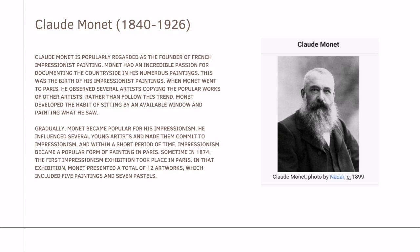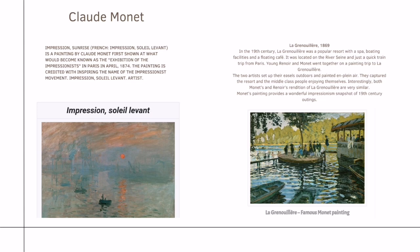Sometime in 1874, the first Impressionism exhibition took place in Paris. In that exhibition, Monet presented a total of 12 artworks, which included 5 paintings and 7 pastels. Impression, Sunrise is a painting by Claude Monet, first shown at what would become known as the exhibition of the Impressionists in Paris in April 1874, and is credited with inspiring the name of the Impressionist movement.